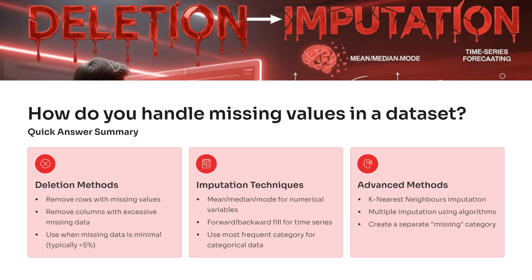Third, advanced methods. These include algorithmic approaches like k-nearest neighbors imputation, multiple imputation, or even creating a separate category called 'missing' when the absence of data itself carries meaning. Always remember, there's no one-size-fits-all method — your choice depends on why the data is missing and how much is missing.